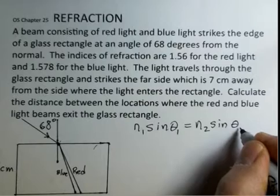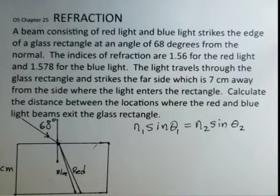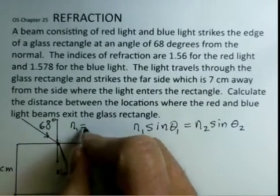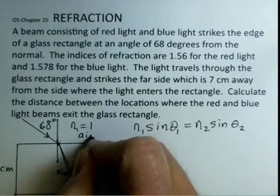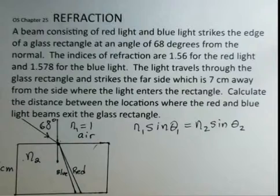And in our second medium, the multiplication N2 sine theta 2 will turn out to be equal to N1 sine theta 1. So I'm going to call this medium 1. And in the air, index of refraction is 1. N2 is here. And the indices of refraction numbers are different.